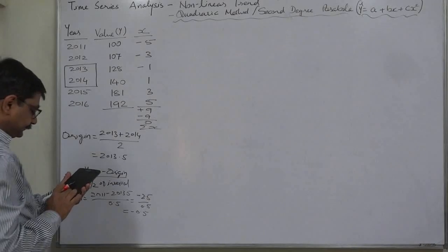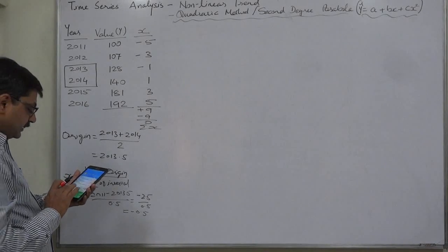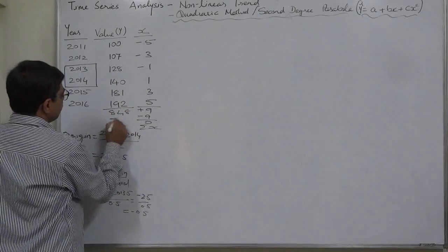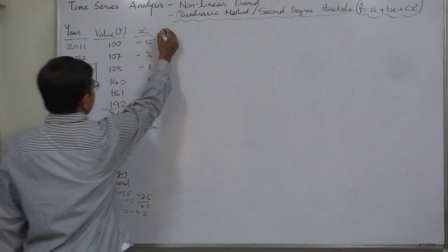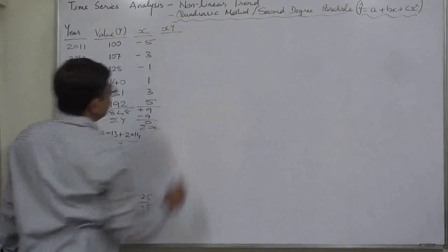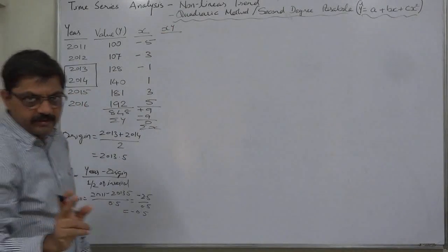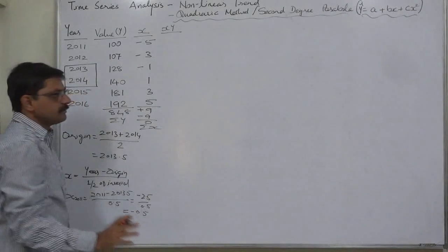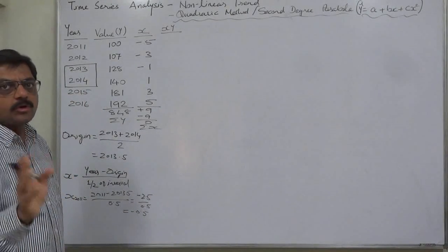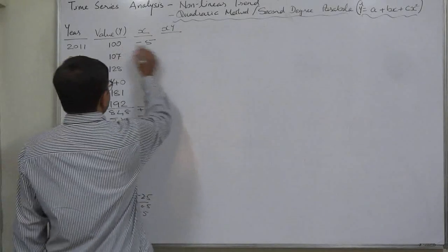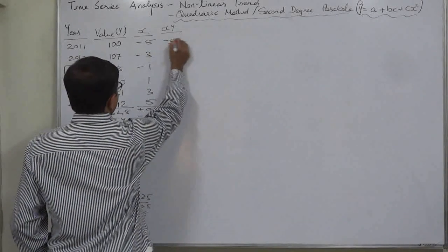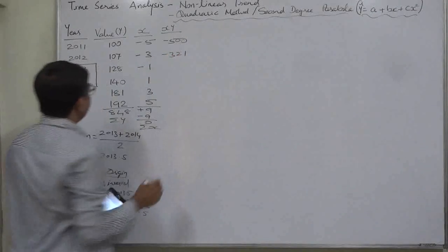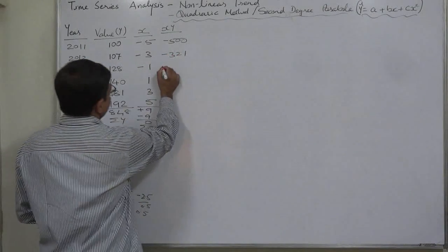The positive values sum to 9 and negative values sum to minus 9, so the total is 0 — the summation of X must always be 0. The summation of Y (ΣY) is 848. Now we need XY. Computing XY: 100 × (−5) = −500; 107 × (−3) = −321; 128 × (−1) = −128.